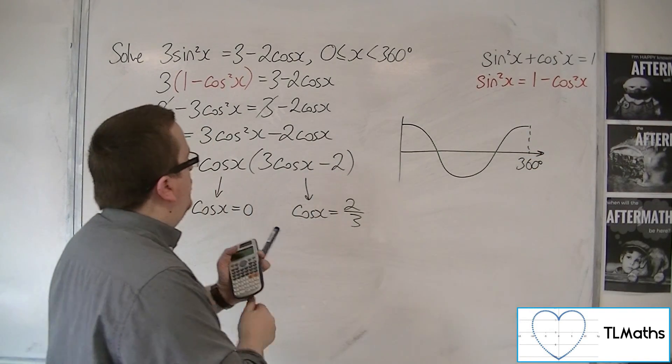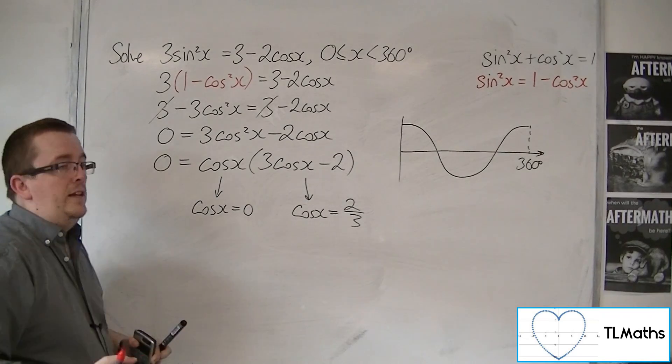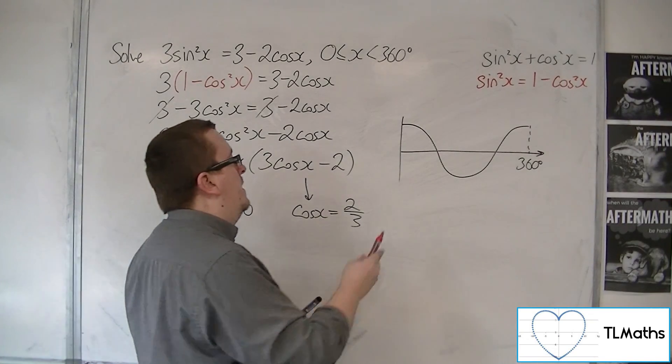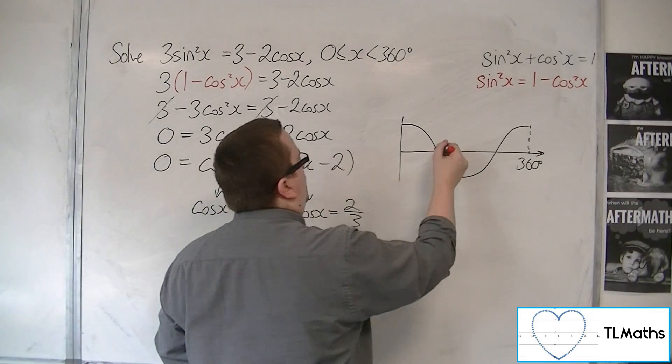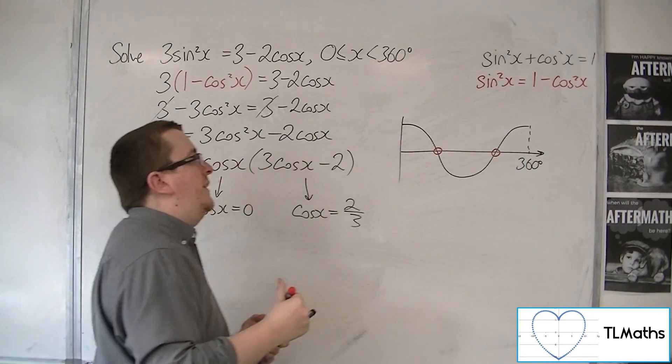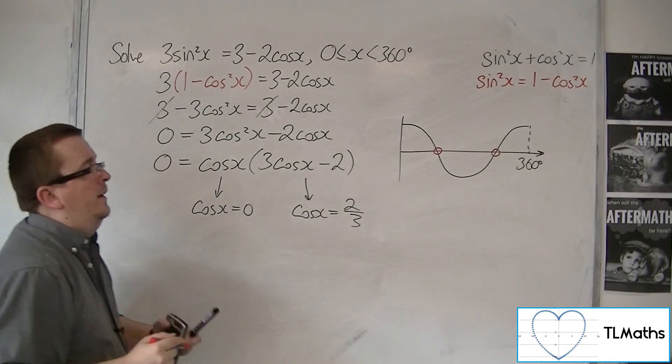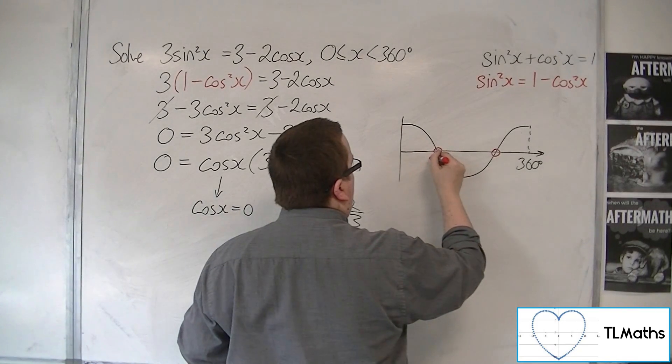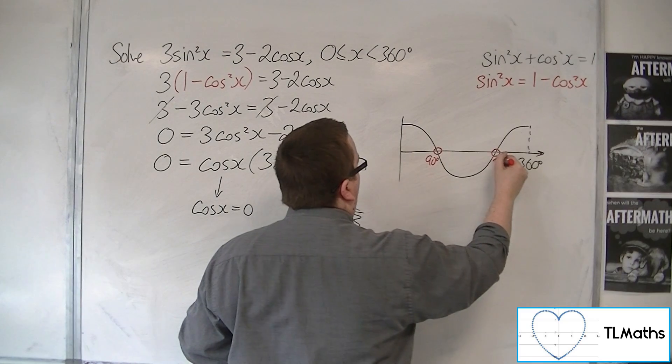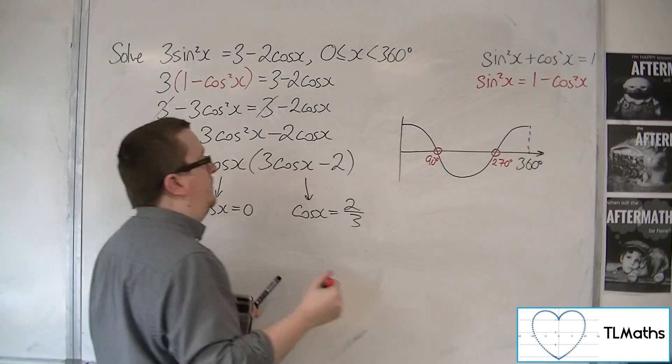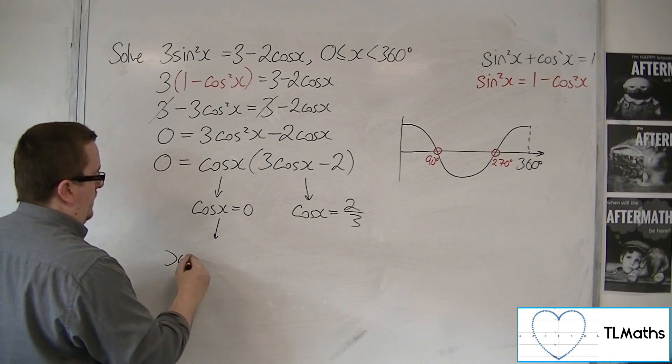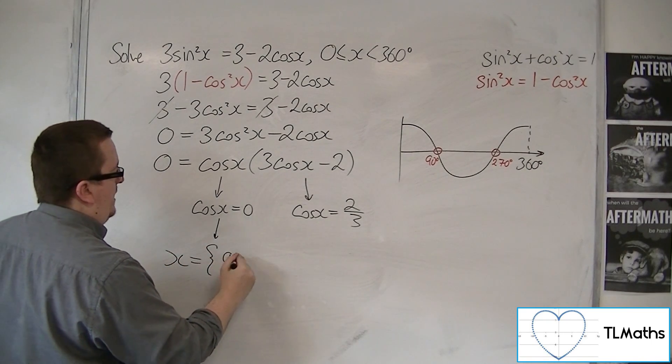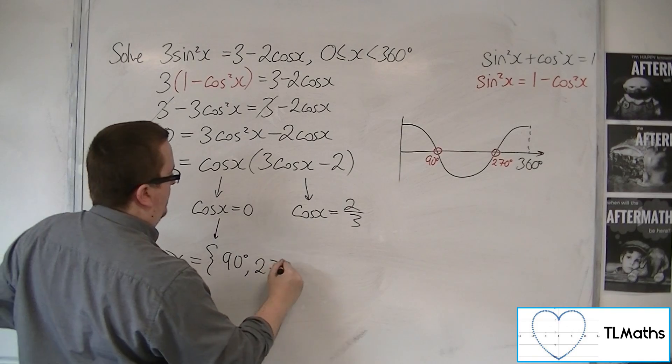So if I draw in the line y equals 0, that is the x-axis. And so that is where the curve crosses the x-axis. That's what I'm looking for. And I know that that point is 90 degrees, and that point is 270 degrees. So the two solutions coming from this equation are 90 and 270.